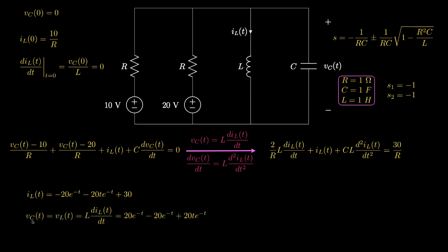Again, to solve for the capacitor voltage we take the derivative of the inductor current and multiply by the inductance. The derivative gives 20·e^(−t) minus 20·e^(−t) plus 20·t·e^(−t), and multiplying by the inductance of 1 henry gives the capacitor voltage: 20·t·e^(−t). Note that the two constant exponential terms cancel, leaving only the t·e^(−t) term.